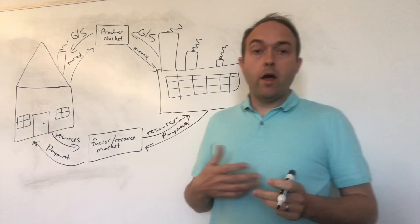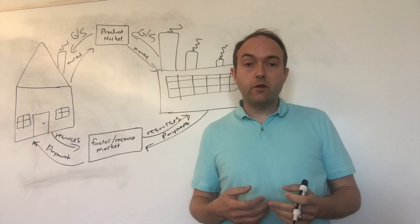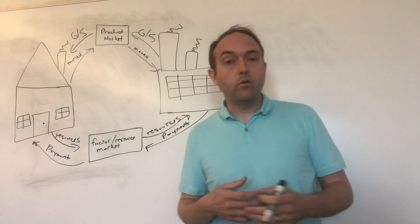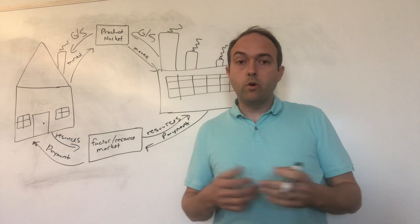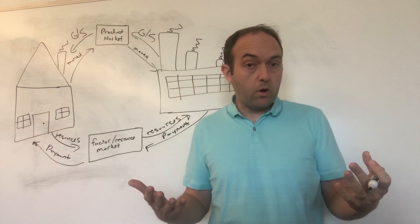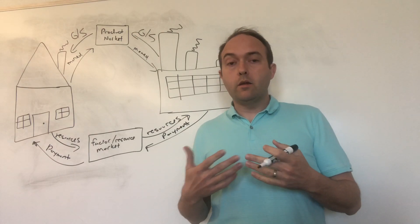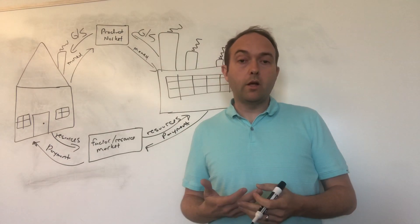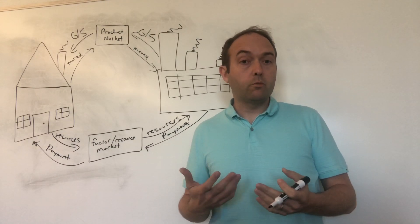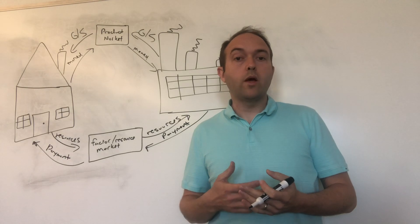And now you think about why households might want to engage in that transaction, why you might want to sell a lot of your time. Well, if you want to buy things like televisions and houses and electricity, you've got to get that money from somewhere. You've got to get that income from somewhere. The way most people get it is they sell their labor or some sort of resource they own to a firm.